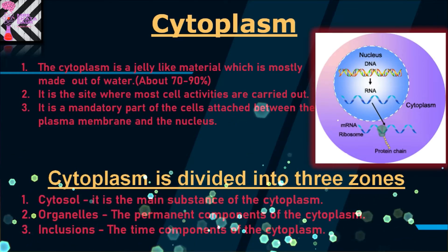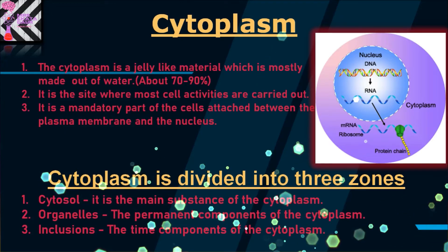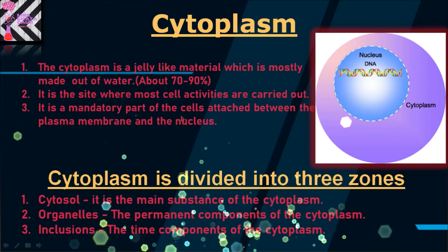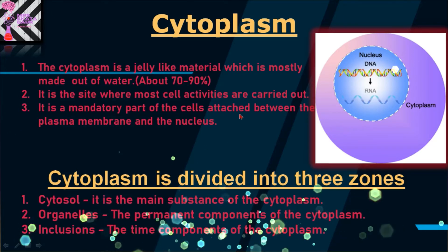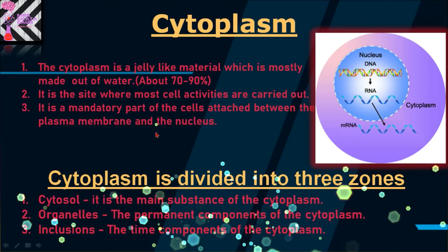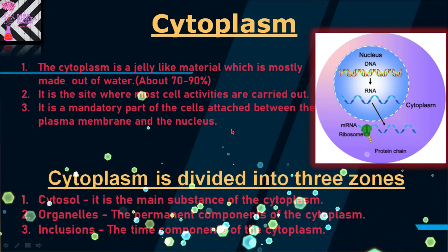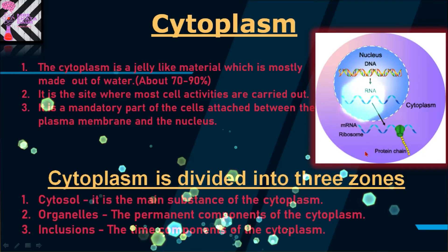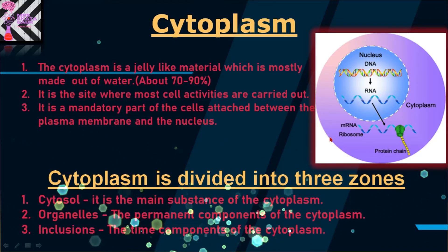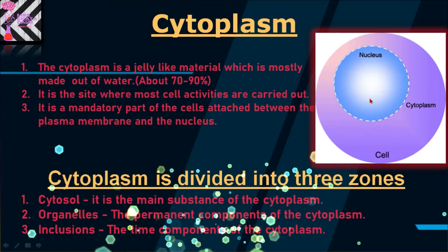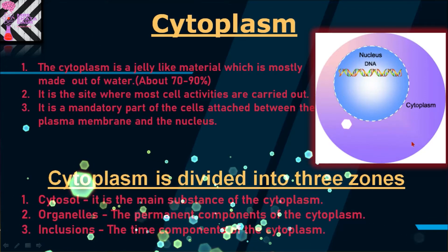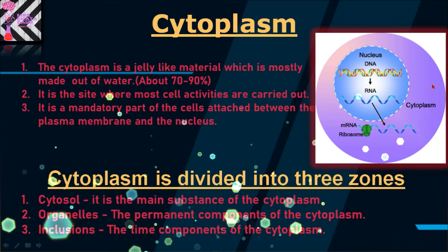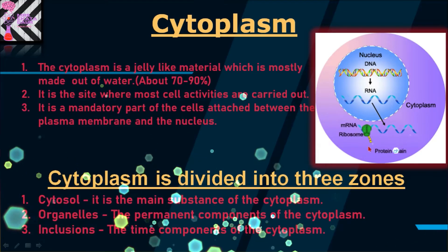Many cell activities are carried out in the cytoplasm. It is the mandatory part of the cell, located between the plasma membrane and the nucleus. The plasma membrane is the outermost covering, then there is the nucleus, and between them, that fluid-like material is present which is known as cytoplasm.